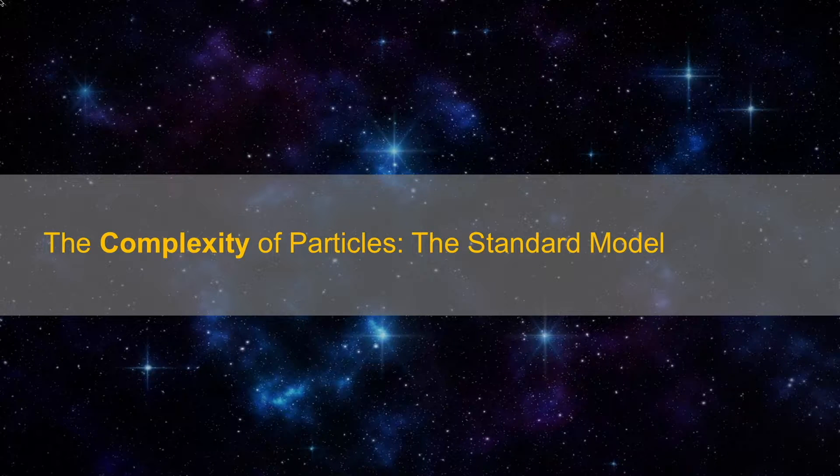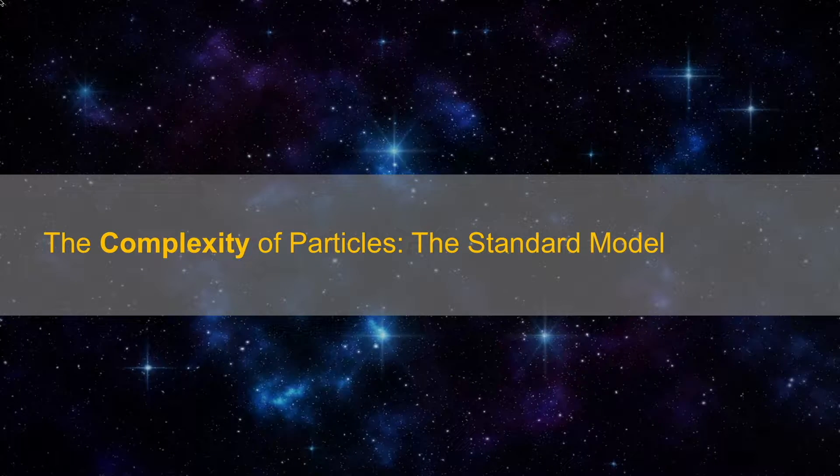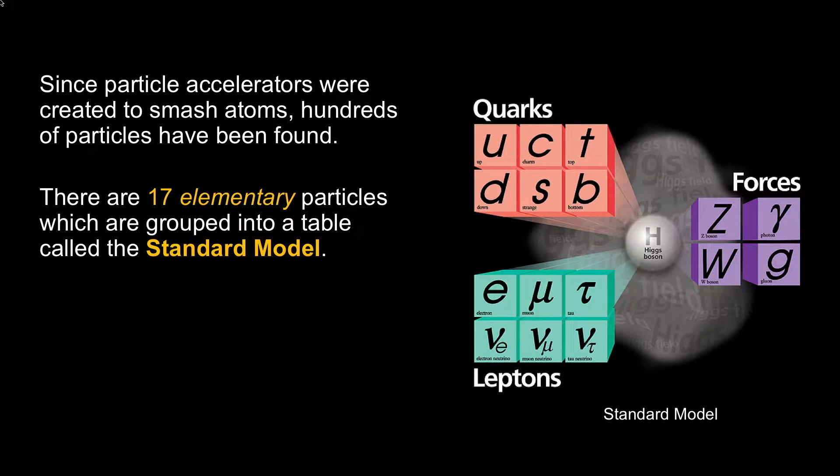Matter was simplified to be atoms, which are simply based on number of protons. But as you smash atoms together, the particles become more complex. Since particle accelerators were created, hundreds of subatomic particles have been found, grouped together into 17 elementary particles in a table referred to as the standard model.